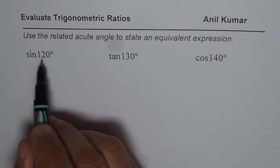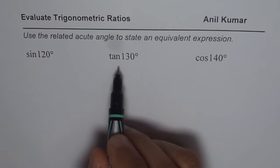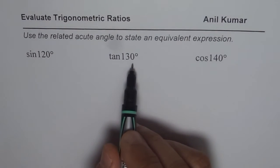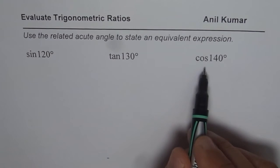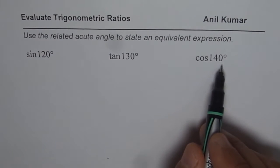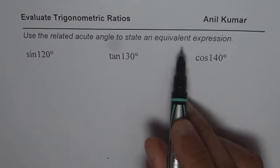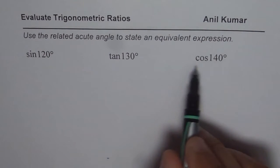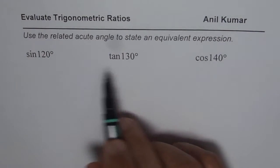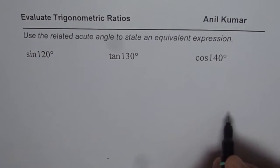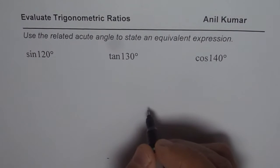We are given sine of 120 degrees, tan of 130 degrees, and cosine of 140 degrees. You need to find equivalent expressions for each. You can pause the video, answer the question, and then look into my suggestion.